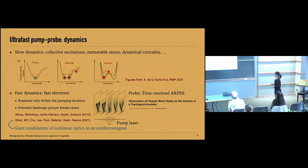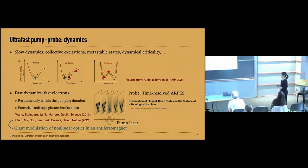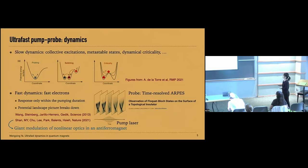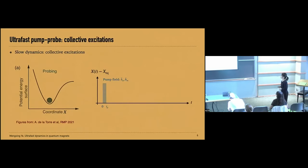This similar idea of faster dynamics of electrons can also be applied to understand giant modulation of nonlinear optics in antiferromagnets, where in equilibrium the nonlinear optical signal — such as second harmonic generation — was believed to be sensitive to the antiferromagnetic order that breaks inversion symmetry. However, this picture breaks down when there is a strong pump modulation to the system, which questions our understanding of nonlinear optics when it is out of equilibrium. This is a broad review of the general picture of ultra-fast pump-probe dynamics.